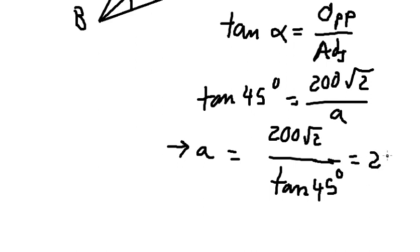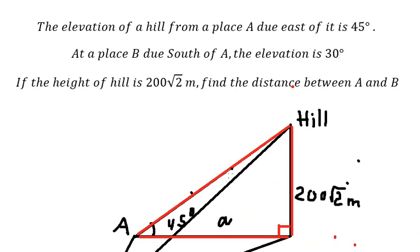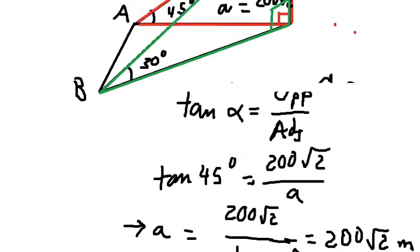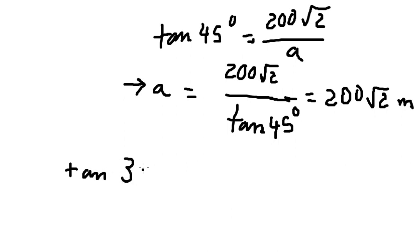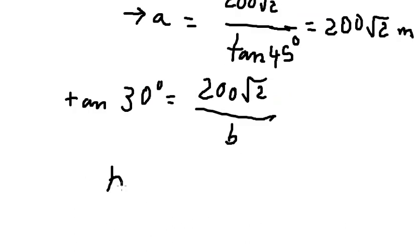We have 200 times the square root of 2, so this is the value of A. Now let's go to the next one. I use the green color here. With the green color, we have another right triangle, so we use the same formula. This time we have tan(30 degrees) equals 200 times the square root of 2 over B — B is this one. So we can find the value of B.